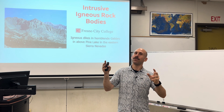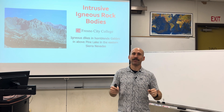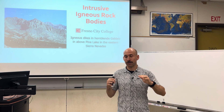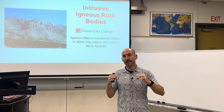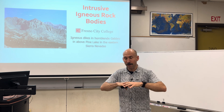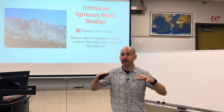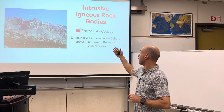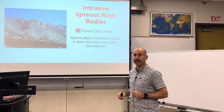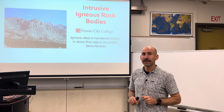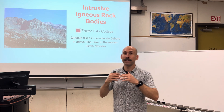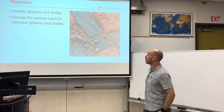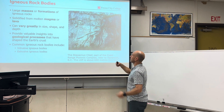Igneous rocks cool from a melt and they form structures or features underneath the surface and on the surface. Rocks that form underneath the surface from magma are igneous intrusive rocks and the features they create are igneous intrusive rock bodies. On the surface they're extrusive rock bodies, but for this one we're looking at what's happening below the surface.